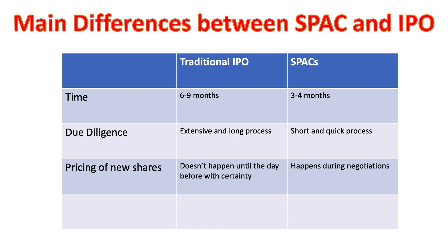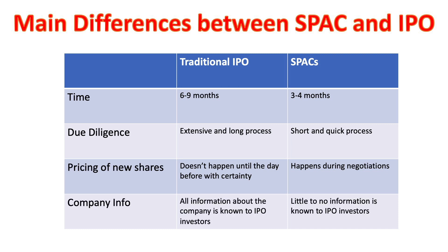The third difference is in the pricing of the new shares. In a traditional IPO, this doesn't happen until the day before the IPO with any certainty. Whereas in a SPAC process, this happens as soon as the negotiations are completed and the SPAC agrees to acquire the company. The fourth difference is in the amount of information available about the company at IPO. In a traditional IPO, all the information is known through a prospectus filed with the SEC. Whereas in the SPAC process, very little information is known — in most cases, all that's known is that the SPAC intends to acquire a company in a given sector.